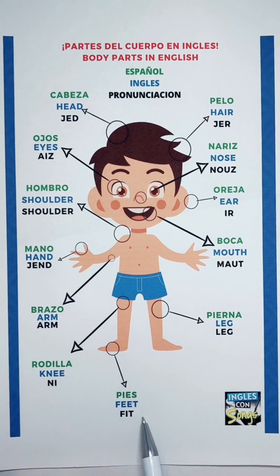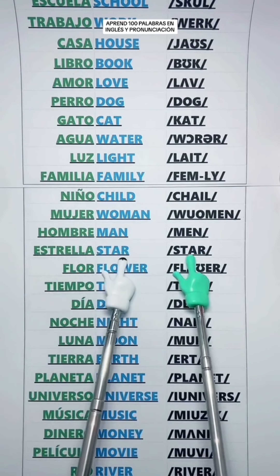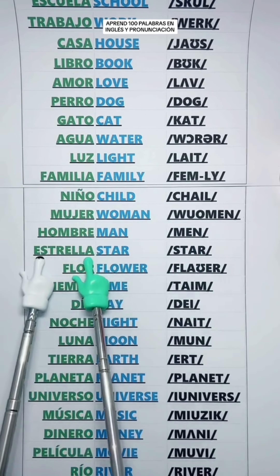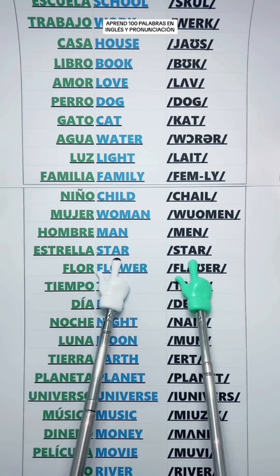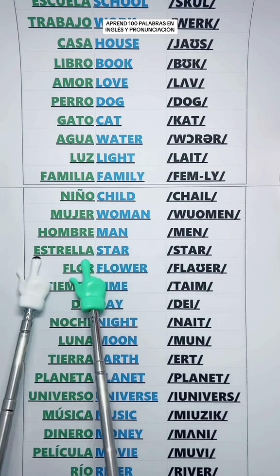Woman — Mujer. Man — Hombre. Star — Estrella.